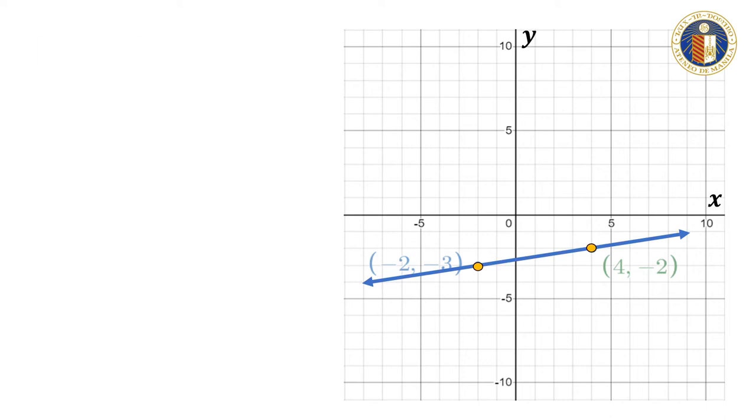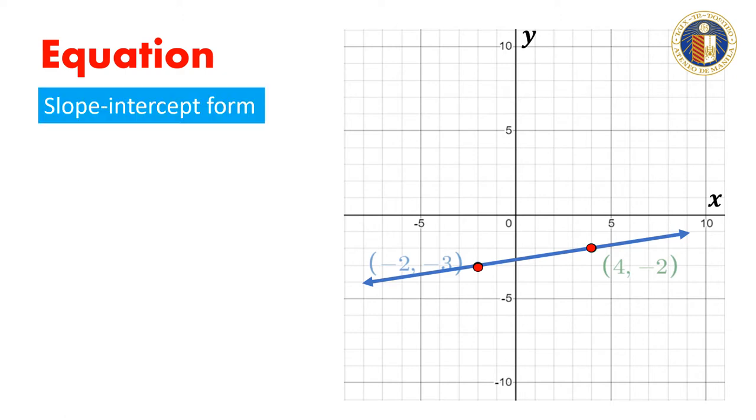We want to determine the equation of the line passing through the two given points. We want the equation to be in slope-intercept form, which is the form y equals mx plus b, where m is the slope and b is the y-intercept of the line.